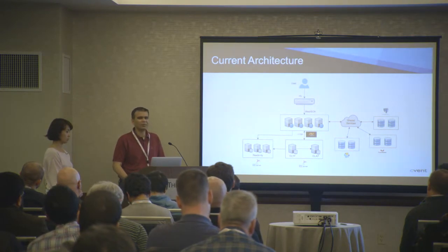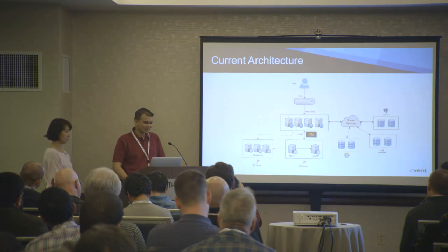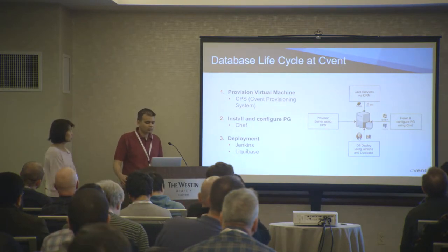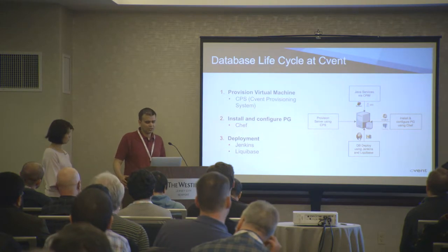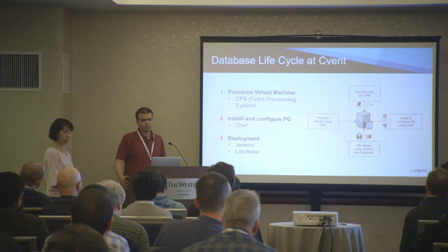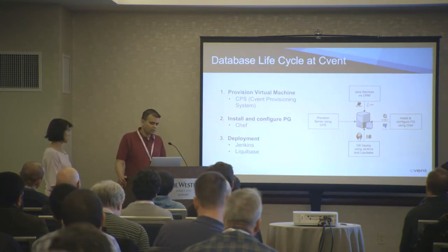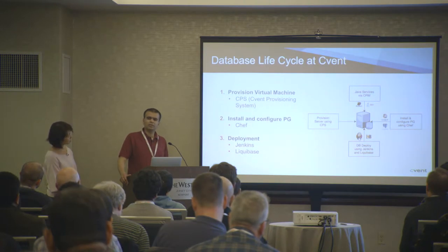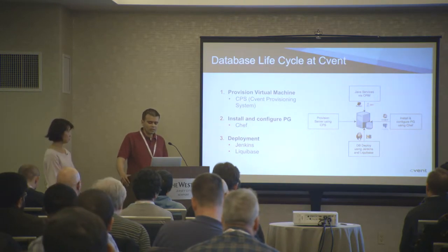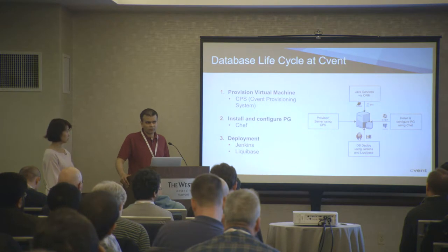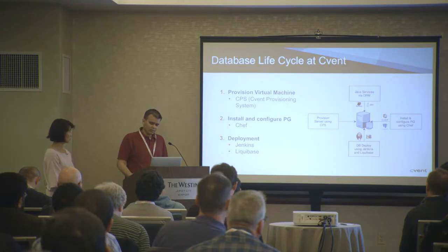When we realized it was growing faster than we could build them, we decided to look into DevOps tools. This is how our typical database lifecycle looks at Cvent. We started with provisioning using CPS, which is our in-house build provisioning system. Then we install and configure Postgres completely using Chef — there is no manual intervention there. All our deployment is handled by Jenkins and Liquibase. Java services access the Postgres instance using JDBC driver, and we use MyBatis as the ORM for services.